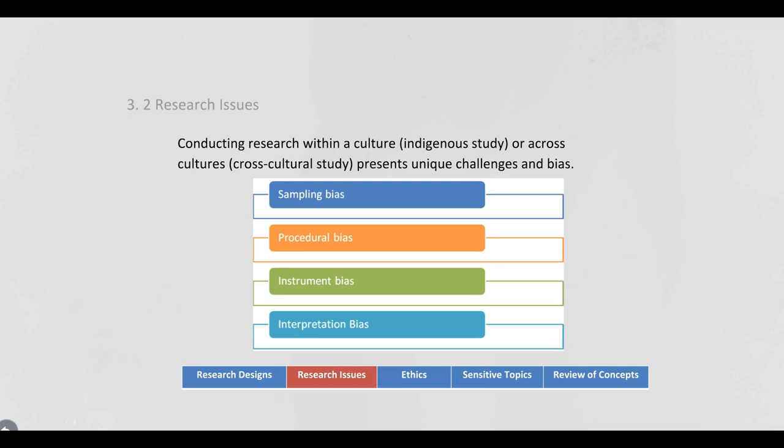In terms of equivalence, we need to deal with bias, and bias can come from different places. Understand the difference between sampling, procedural, instrumental, and interpretational bias.